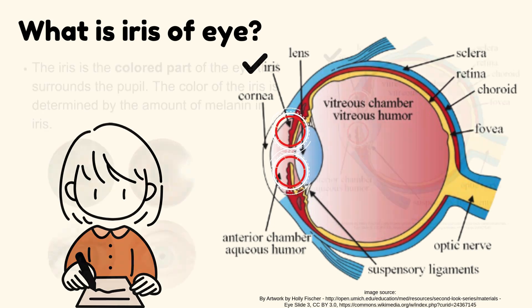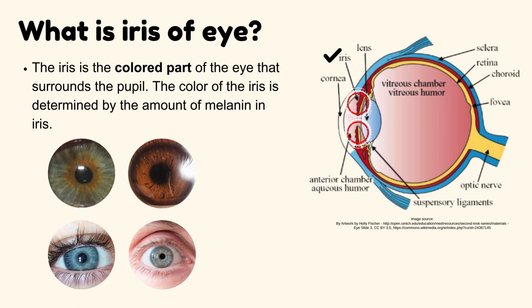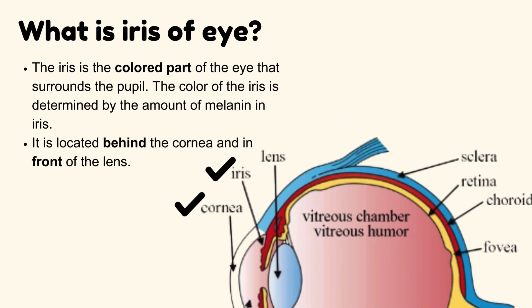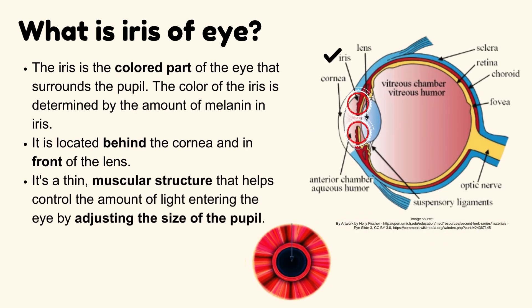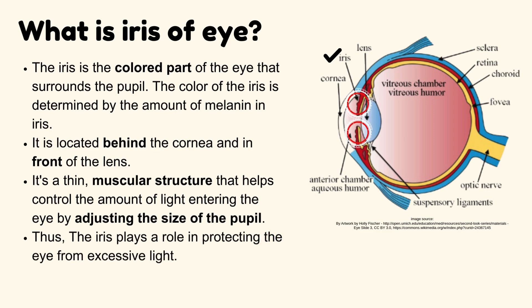What is the iris of the eye? The iris is the colored part of the eye that surrounds the pupil. The color of the iris is determined by the amount of melanin in the iris. It is located behind the cornea and in front of the lens. It's a thin muscular structure that helps control the amount of light entering the eye by adjusting the size of the pupil, thus playing a role in protecting the eye from excessive light.